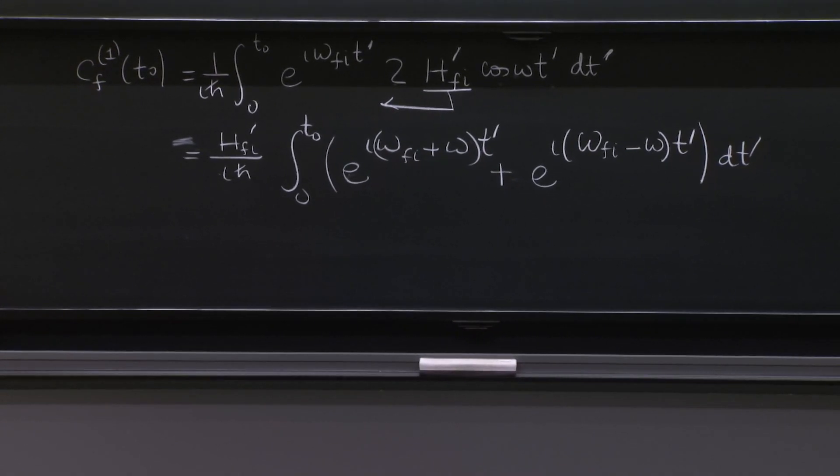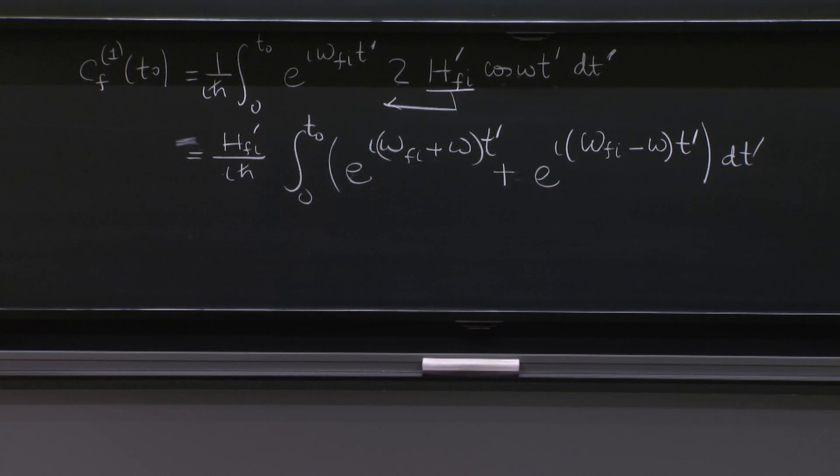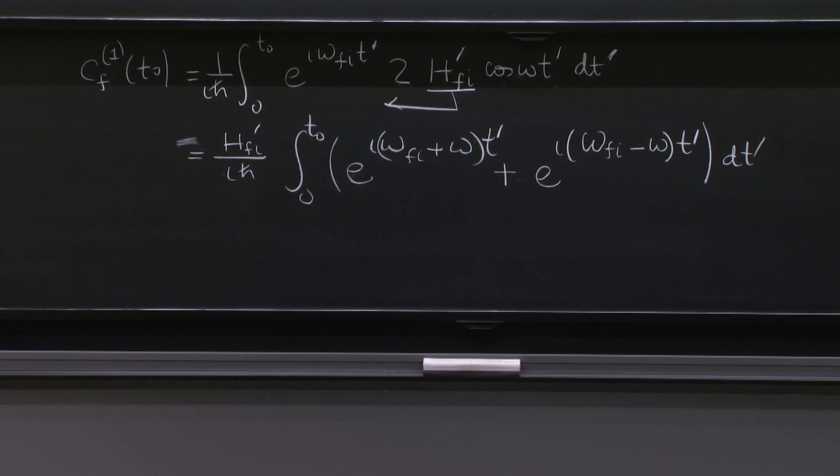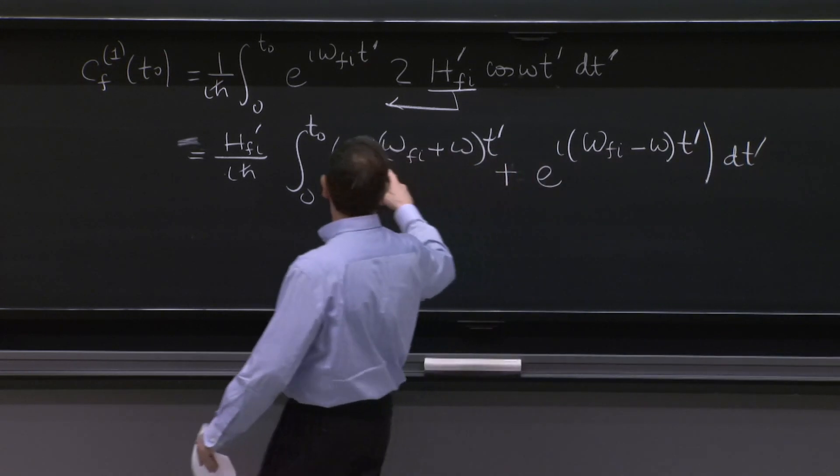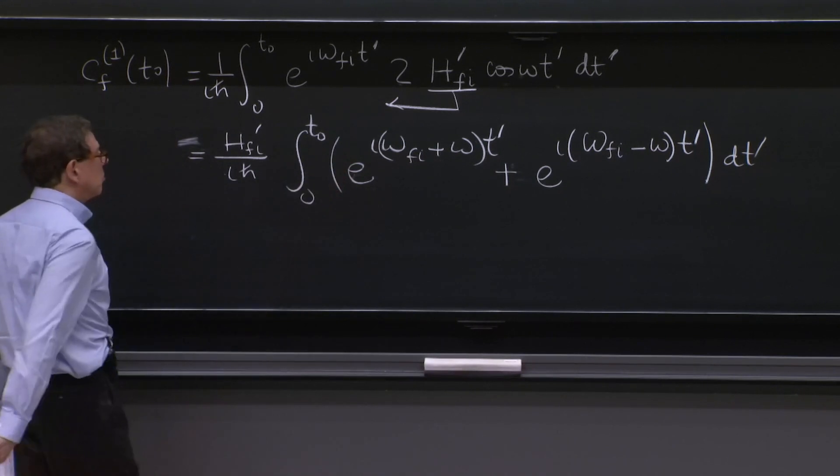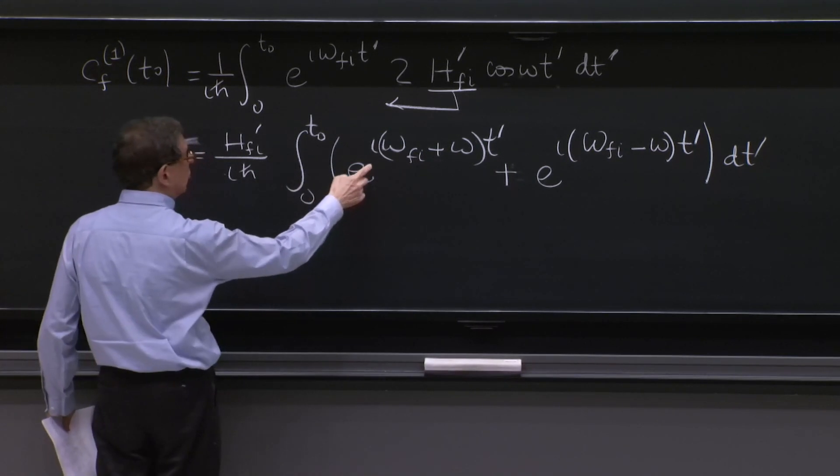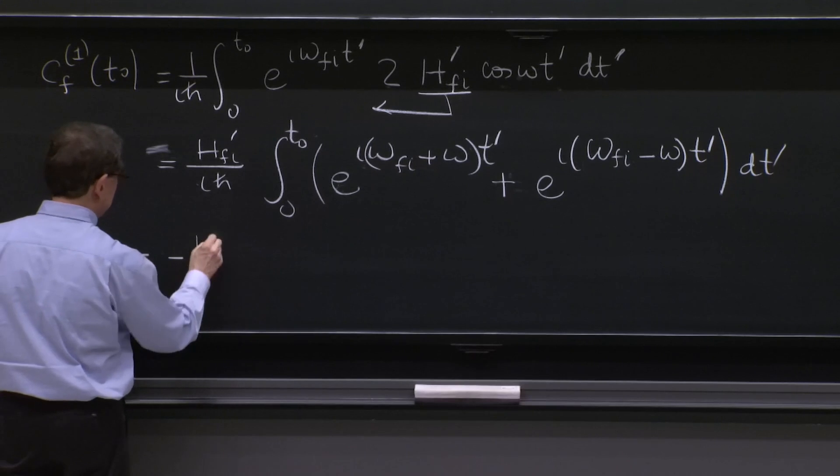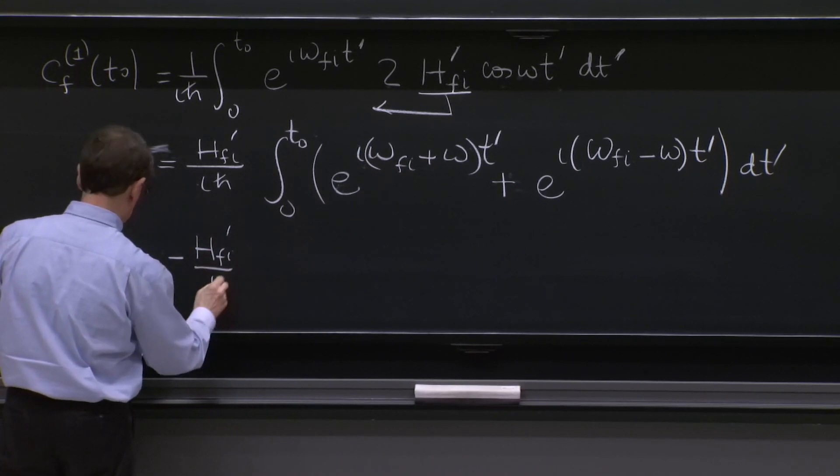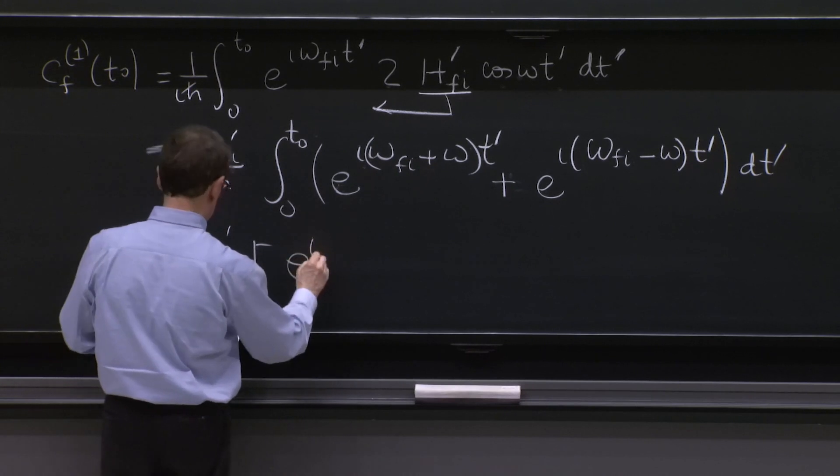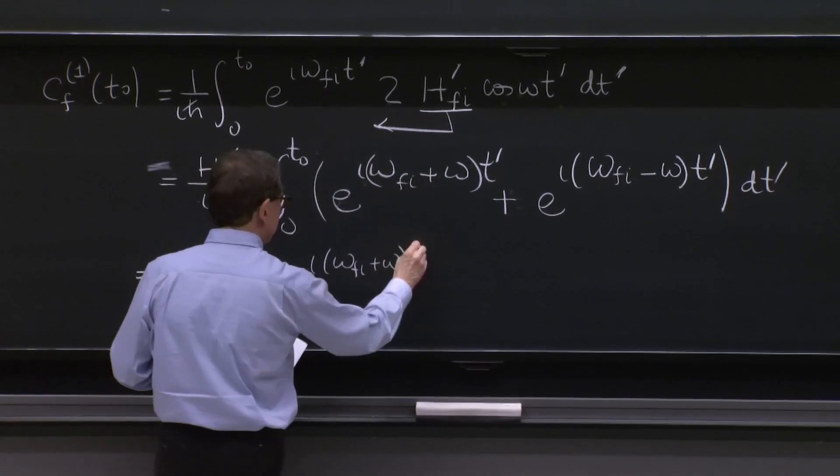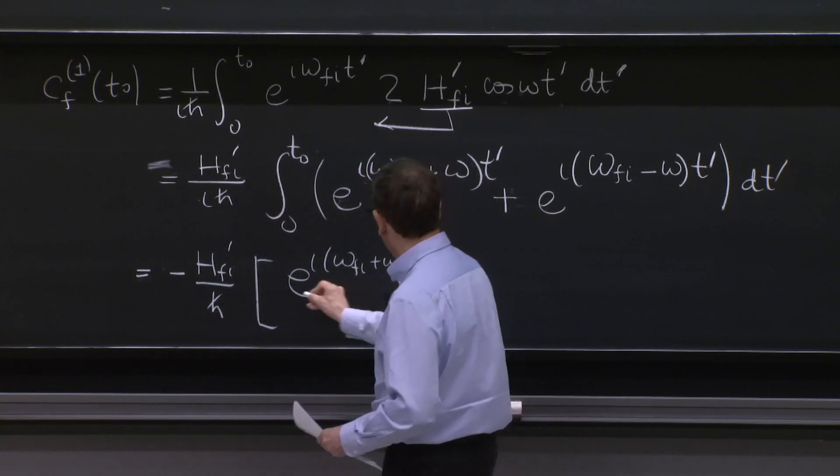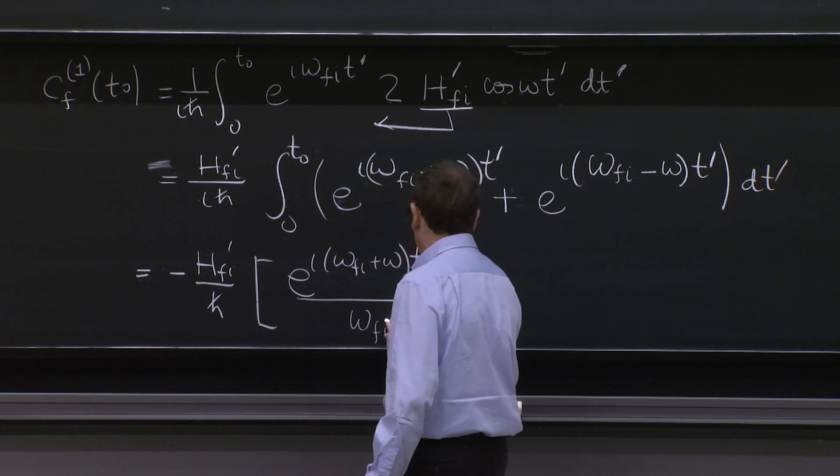Well, that's very nice. This is all doable. The h fi doesn't give us any trouble. It's a constant. It's out of the integral. It's all pretty nice and simple. So we can do these two integrals. They're integrals of exponentials. So it's just an exponential divided by those coefficients. So I'll just do it and evaluate it between t0 and 0. So what do we get minus i h fi prime over h bar e to the i omega fi plus omega t0 minus 1 over omega fi plus omega.